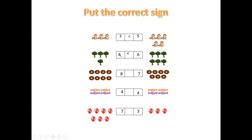4 is less than 6. Count: 1, 2, 3, 4. And here: 1, 2, 3, 4, 5, 6. Which is more? 6. So, open mouth to the big number. 3 plus 2 is 5. Here, 3. So 3 is less than 5.